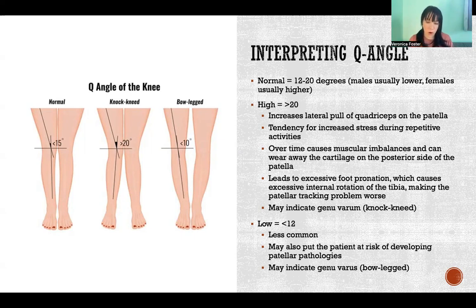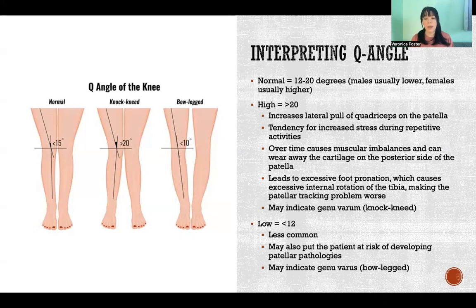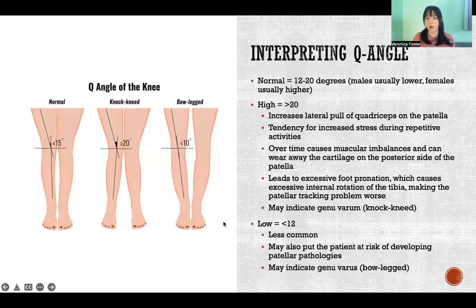When the Q angle is low — under 12 — that is not very common. We much more often see the opposite problem; it's usually excessive rather than too low, but it can be too low. In that case the person would also be at risk of developing patellar pathologies, as described. A low Q angle could also indicate genu varum, or bow-legged, like we see in the picture here, where we have that angulation facing inward instead of facing outward.